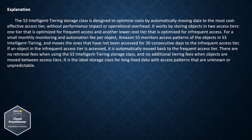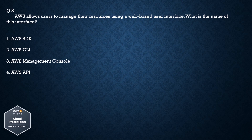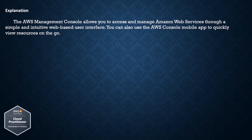It is the ideal storage class for long-lived data with access patterns that are unknown or unpredictable. Question number 8: AWS allows users to manage their resources using a web-based user interface. What is the name of this interface? Option 1: AWS SDK. Option 2: AWS CLI. Option 3: AWS Management Console. Option 4: AWS API. The correct answer is AWS Management Console. The AWS Management Console allows you to access and manage Amazon Web Services through a simple and intuitive web-based user interface. You can also use the AWS Console mobile app to quickly view resources on the go.